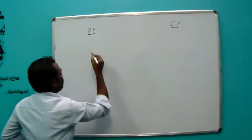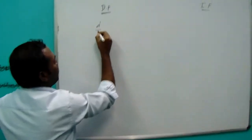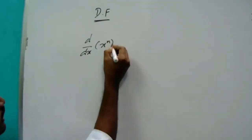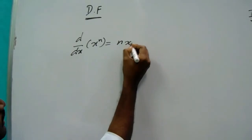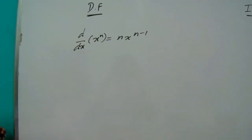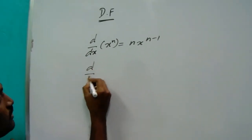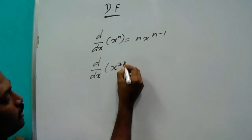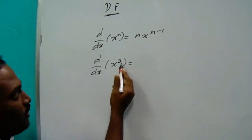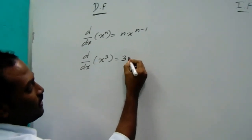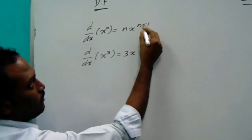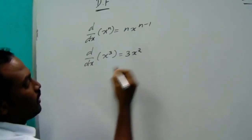First of all, the differential formula. The derivative of x^n is equal to n times x^(n-1). This is the basic form. For example, with x^3, the power 3 is multiplied and the power is reduced by 1, giving 3x^2.